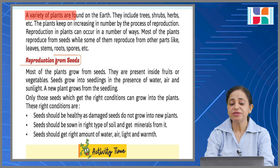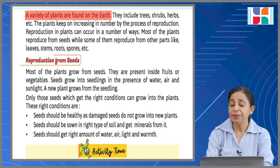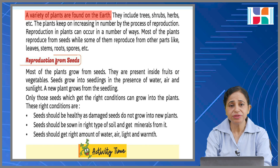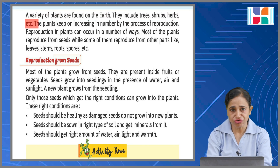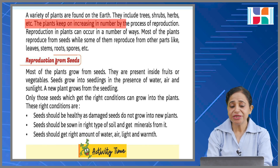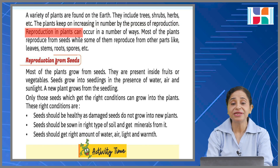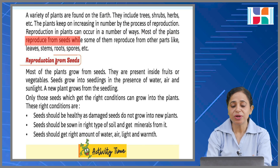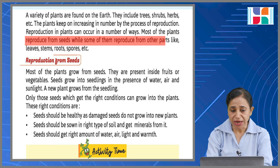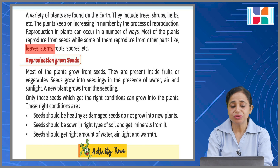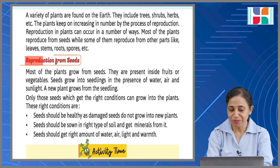A variety of plants are found on the earth. You know that there are not just one type of plant — there are many types of plants. They include trees, shrubs, herbs, etc., which you have read about before. The plants keep on increasing in number by the process of reproduction. Reproduction in plants can occur in a number of ways — most plants reproduce from seeds, while some reproduce from other parts like leaves, stems, roots, and spores.